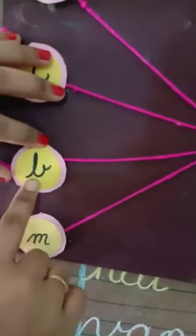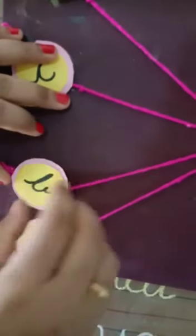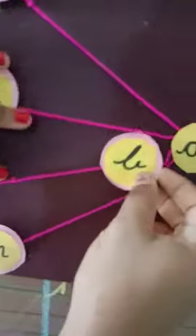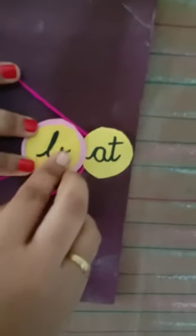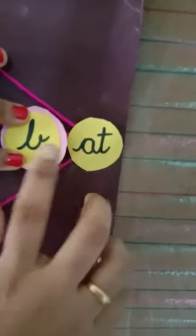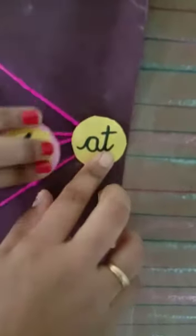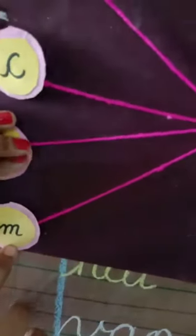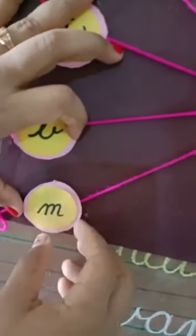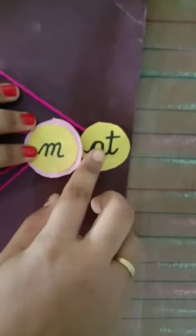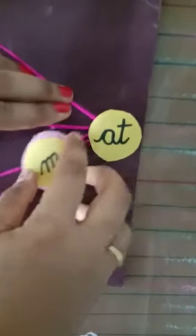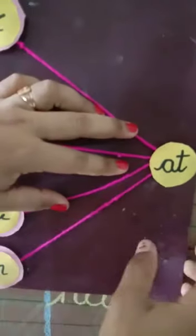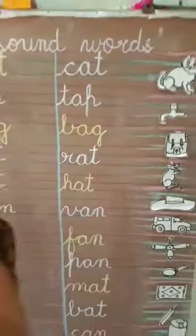Now, which letter is this? B. B says b. When B comes to A-T, which word is from? B-A-T bat. Now, which letter is this? M. M says m. When M comes to A-T, which word is from? M-A-T mat. Okay, children. Are you enjoying the activity?